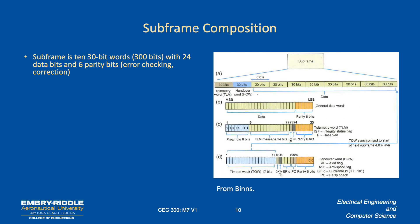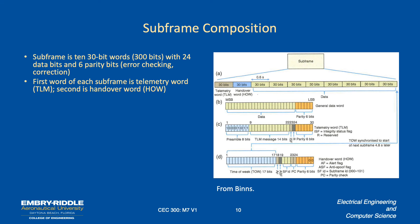Each subframe consists of 10 thirty-bit words, with each word having 24 bits of data and 6 parity bits for error checking and correction. The first word of every subframe is the telemetry word (TLM), which has a specific preamble marking the start of every subframe and is used for synchronization. It contains 14 bits that the GPS spec calls reserved, along with an integrity status flag that tells the user whether the satellite's data is usable and trustworthy, followed by parity bits.